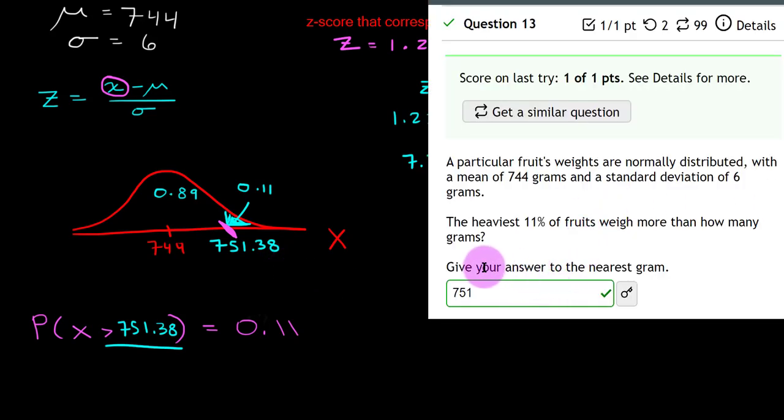Let's type this into our homework to make sure it is correct. Since the homework is requesting the answer to the nearest gram, I have rounded this to 751 grams.